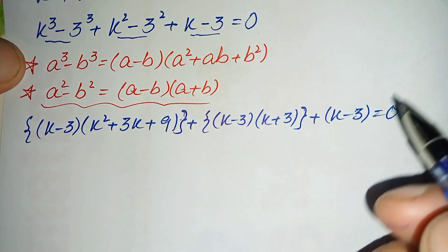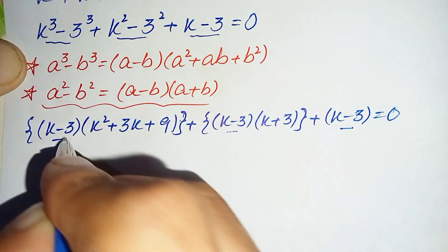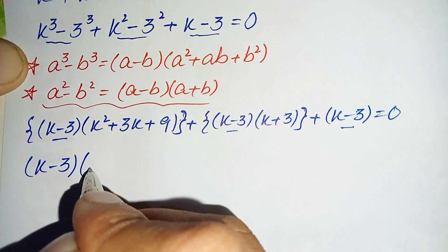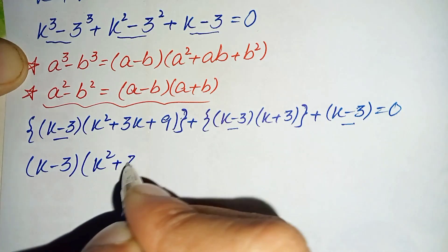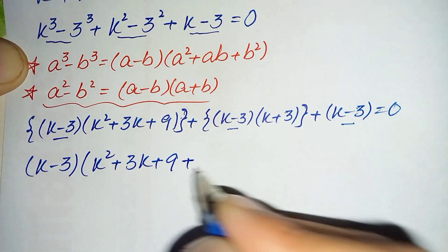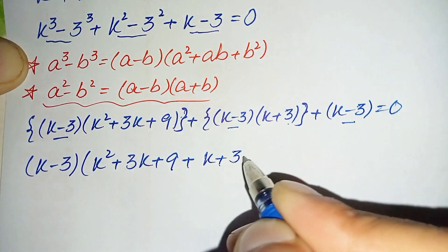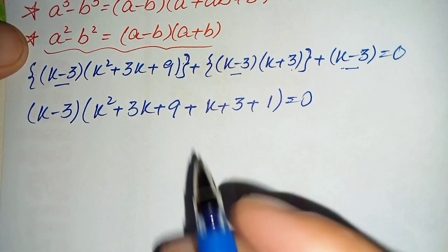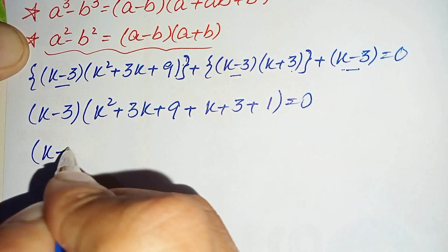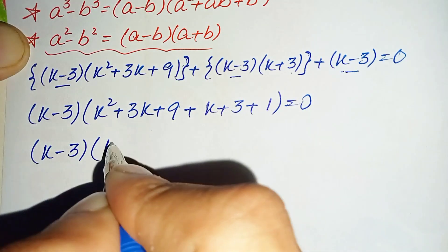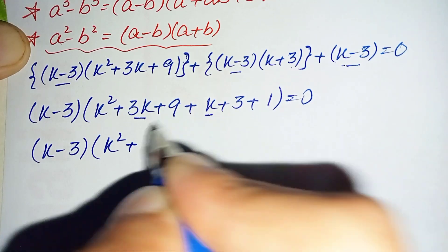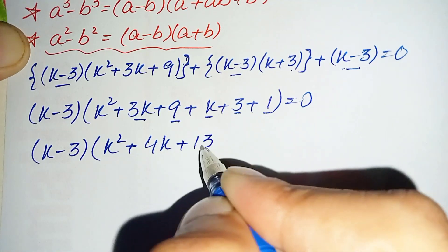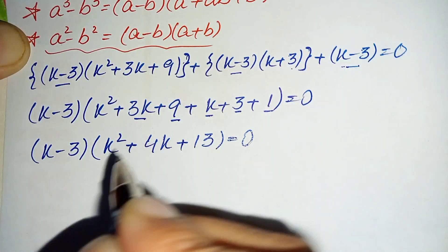Now looking at all the terms, (k minus 3) is common throughout. Taking (k minus 3) out as common factor, the remaining expression becomes k squared plus 3k plus 9 plus k plus 3 plus 1, which simplifies to k squared plus 4k plus 13. So the equation is (k minus 3)(k squared plus 4k plus 13) is equal to 0.